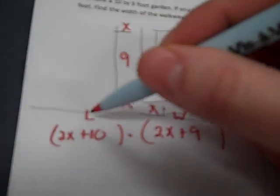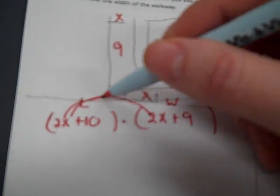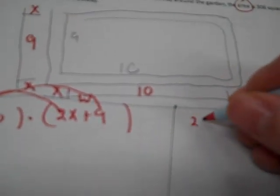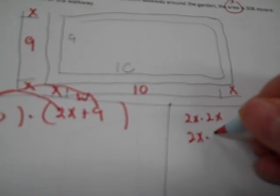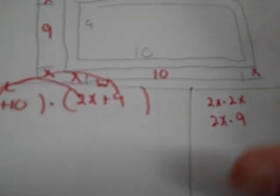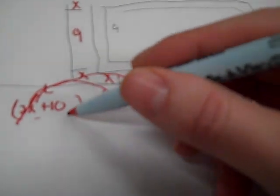Now we need to simplify that multiplication using the distributive method — drawing rainbows. We get 2x times 2x, plus 2x times 9, plus 10 times 2x, plus 10 times 9.